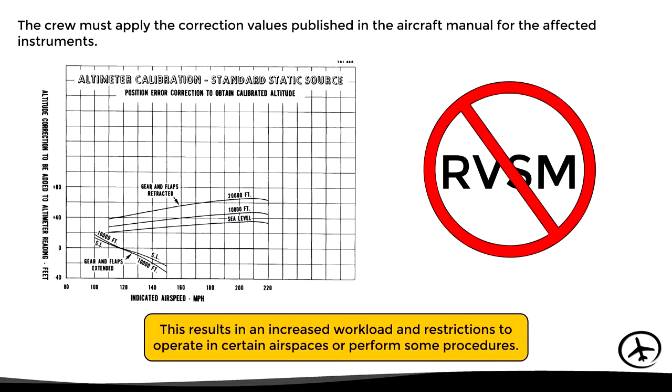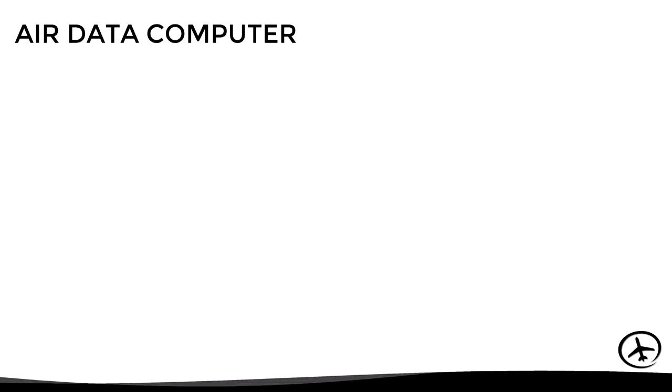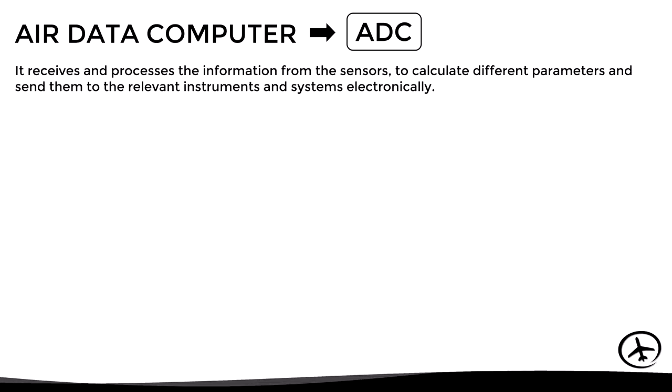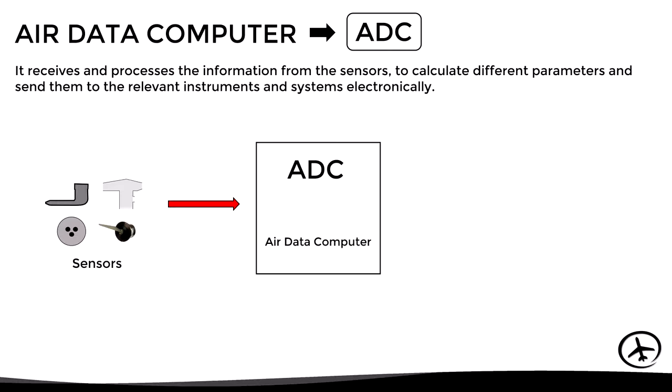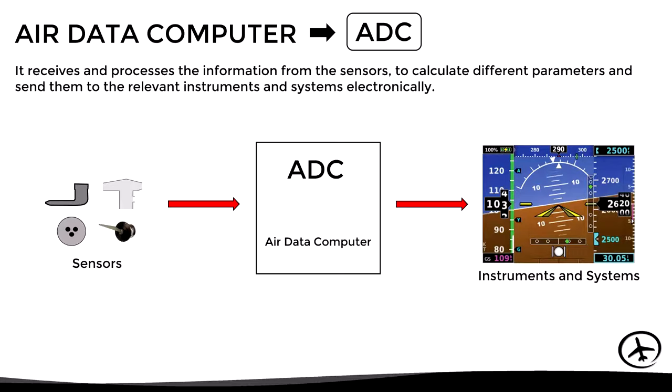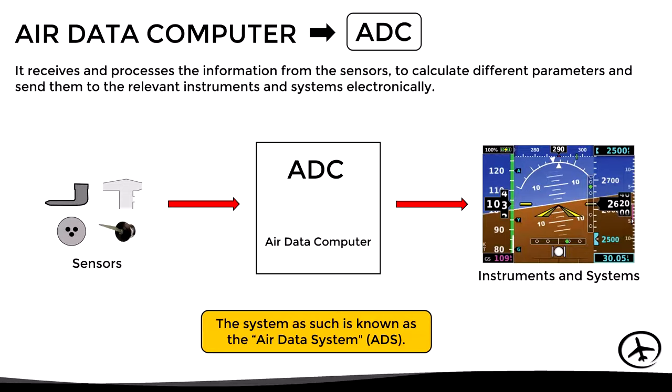Taking into account all the limitations and disadvantages of conventional analog instrument systems, the air data computer was developed. The air data computer, abbreviated as ADC, is a unit that receives and processes information from the sensors to calculate different parameters and send them to the relevant instruments electronically. The ADC is only one component of the system, which as a whole is known as the air data system, or ADS.